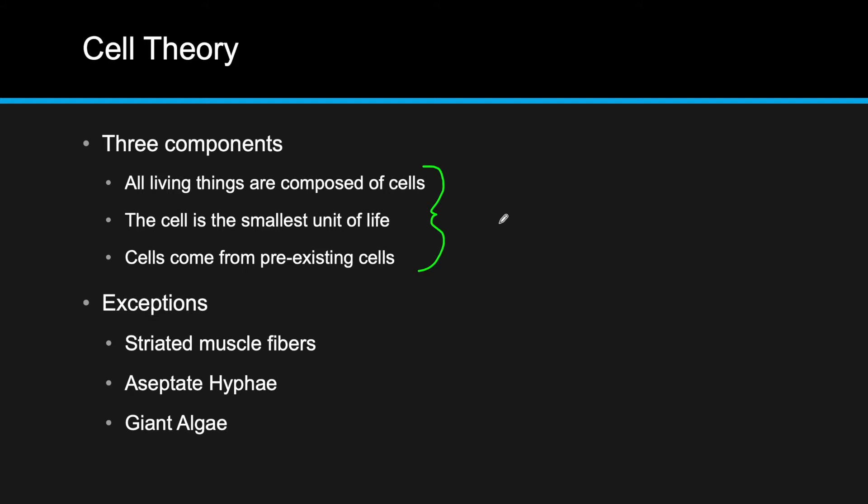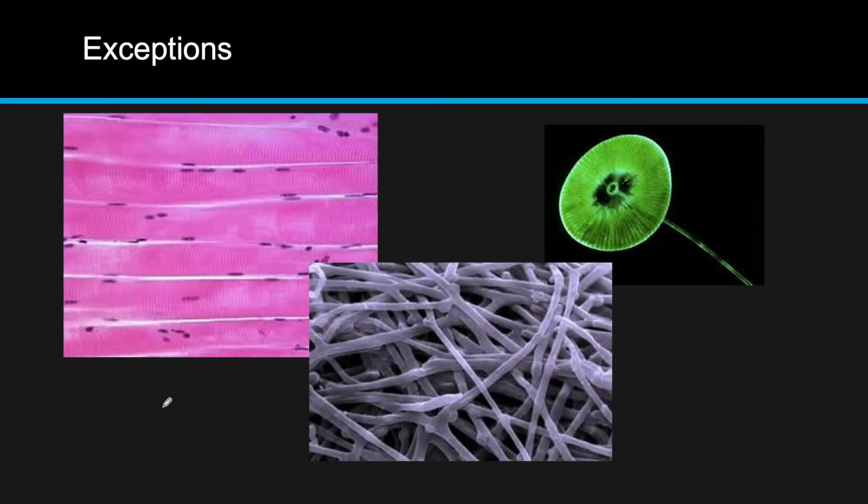The microscope allowed us to see common characteristics such as being surrounded by a membrane, genetic material which controls chemical activities in the cell, and they all contain their own energy release system. If we have any rules in biology or science in general, that's going to lead us to exceptions.